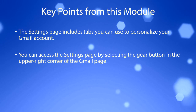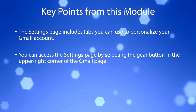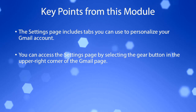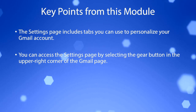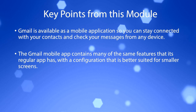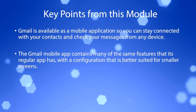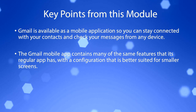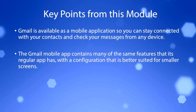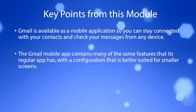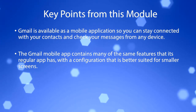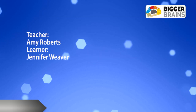The Settings page includes tabs you can use to personalize your Gmail account. You can access it by selecting the Gear button in the upper right corner of the Gmail page. Gmail is also available as a mobile application, so you can stay connected and check your messages from any device. The Gmail mobile app contains many of the same features as the regular app, with a configuration better suited for smaller screens.